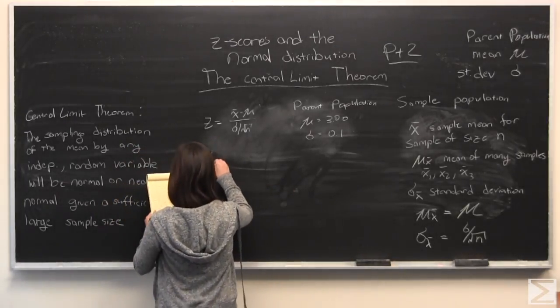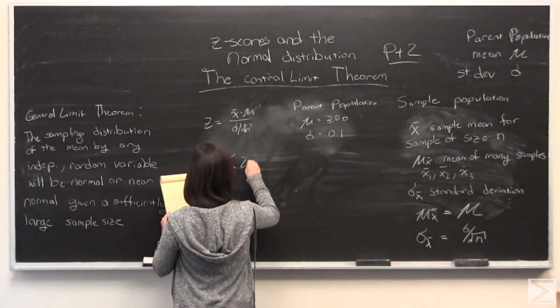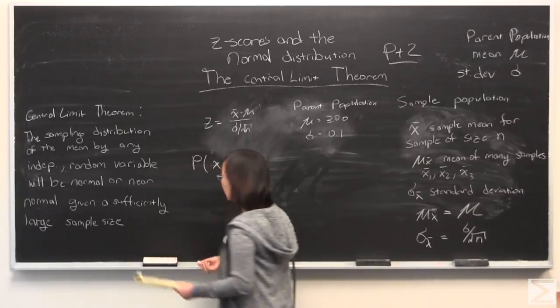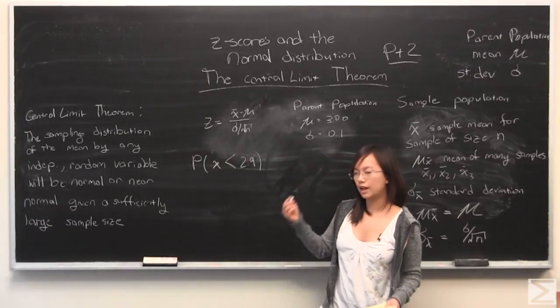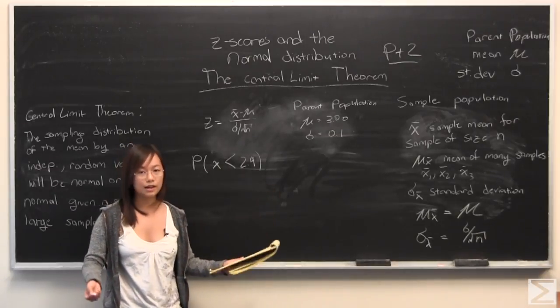So you want to know the probability of finding your x, your one plant less than 2.9 feet. And since it's only one plant, we're going to say n is equal to 1. We are going to turn this into a z-score and that's basically how you're going to use it.